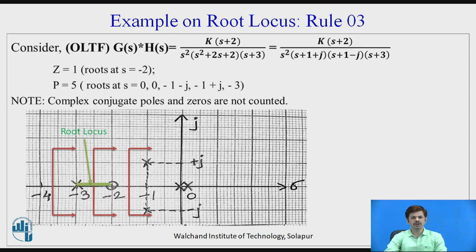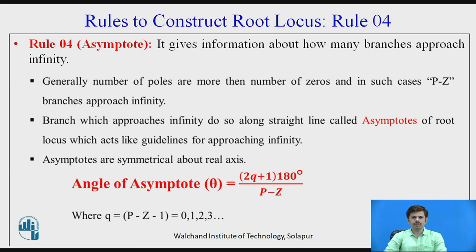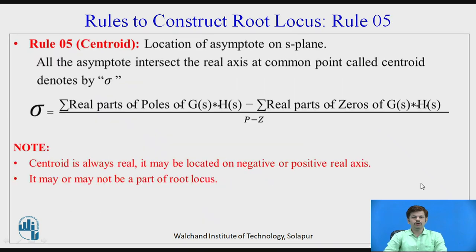Rule 4: Angle of asymptotes. The angle of asymptotes gives information about how branches approach infinity. Since P minus Z branches approach infinity, asymptotes act as guidelines for those branches. The angle of asymptote is represented as theta = (2q+1) × 180 / (P - Z), where q varies from 0, 1, 2, up to P minus Z minus 1.